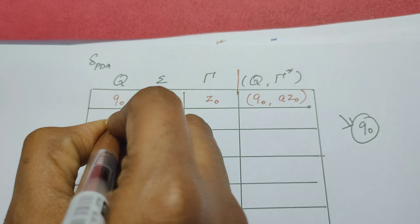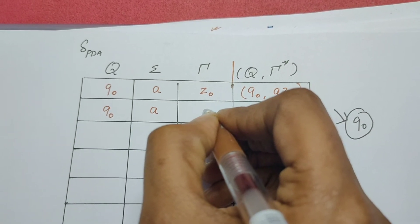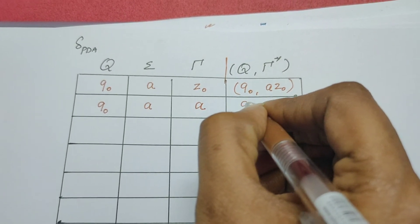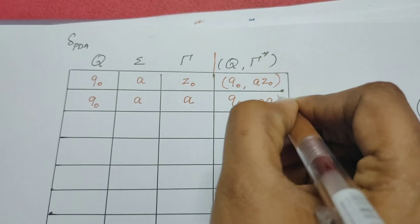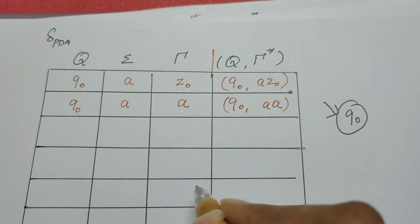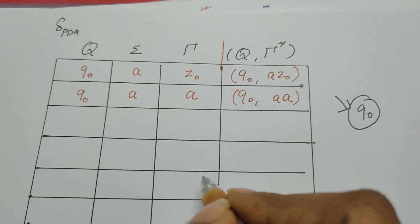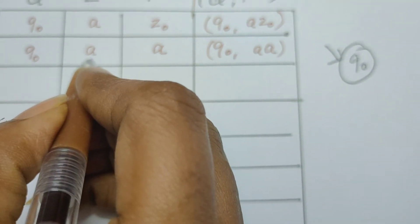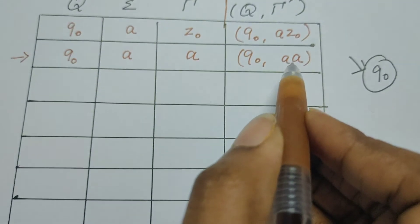The current state remains q0 and it reads the second a. At that point, a is already at the top of the stack from the previous step. It stays in q0 and pushes another a above the existing top of the stack. These a's are pushed onto the stack to remember the count of a's in the input. If there is a third, fourth, or fifth a, this single transition rule is sufficient to read all those a's and push corresponding symbols onto the stack.